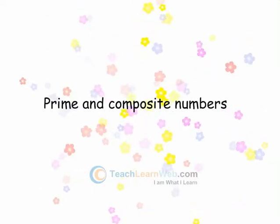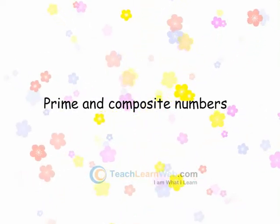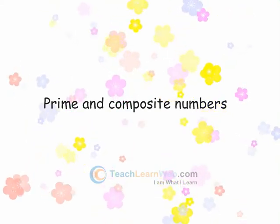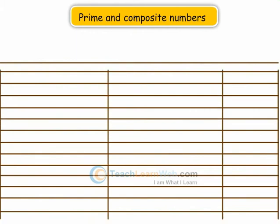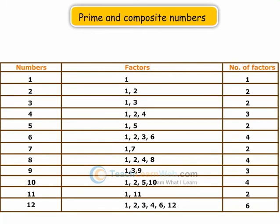Prime and Composite Numbers. In the above table, there are numbers having exactly two factors: 1 and the number itself.